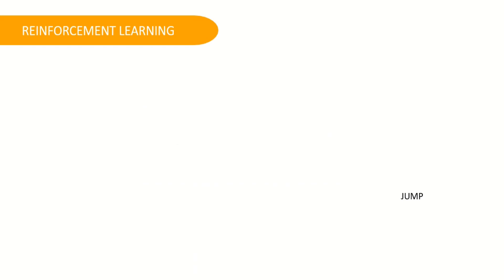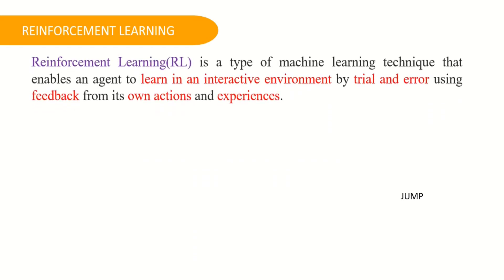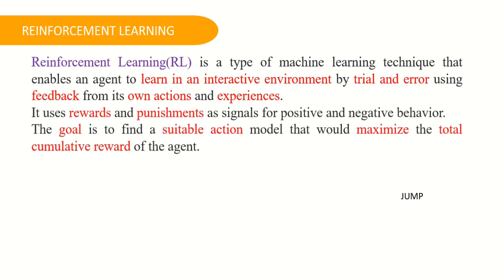And the last one is reinforcement learning. Reinforcement learning is a type of machine learning technique that enables an agent to learn in an interactive environment by trial and error using feedback from its own actions and experiences. It uses rewards and punishments as signal for positive and negative behavior. The goal here is to find a suitable action model that would maximize the total cumulative reward of the agent.